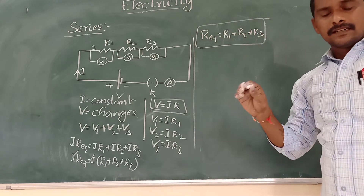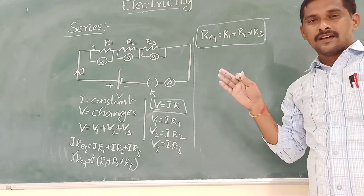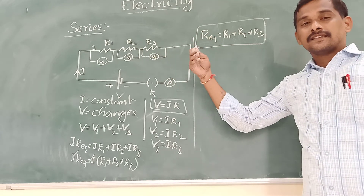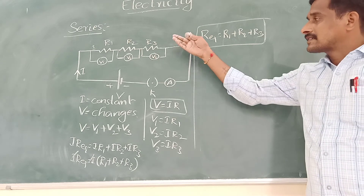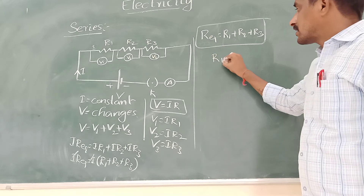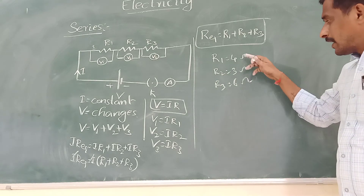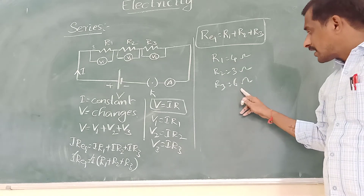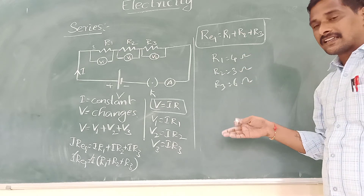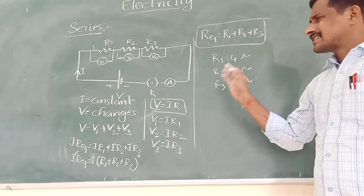In a series combination, the total equivalent resistance is the highest because all resistances are added together. So the equivalent resistance will always be greater than any individual resistance in the circuit. For example, if R1 is 4 ohm, R2 is 3 ohm, and R3 is 6 ohm, the biggest value is 6 ohm, but the total equivalent resistance is 6 plus 3 plus 4 equals 13 ohm, which is greater than 6 ohm.